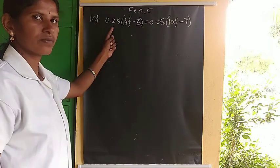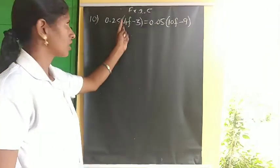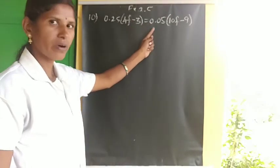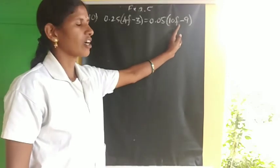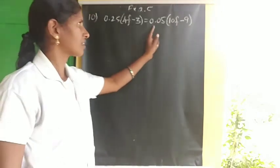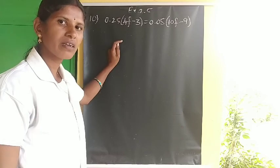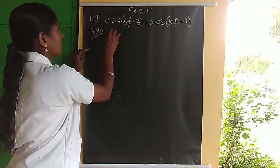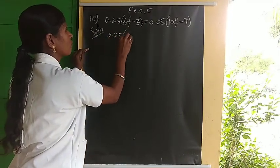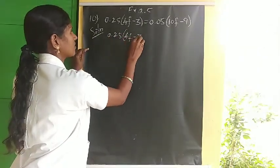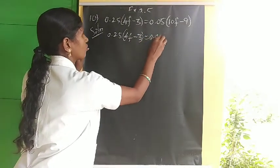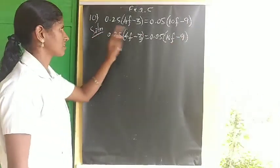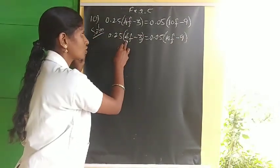Next is the tenth sum: 0.25 into (4F minus 3) equals 0.05 into (10F minus 9). Here the numbers are given in decimal form, so we have to multiply carefully. Multiply inside the brackets: 0.25 times 4 — forget the decimal and multiply only numbers: 4 times 25 equals 100.